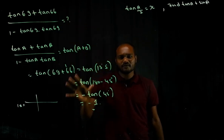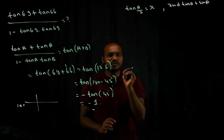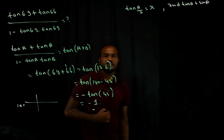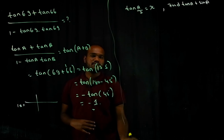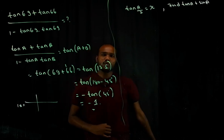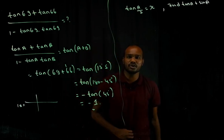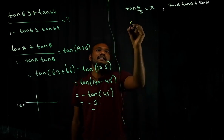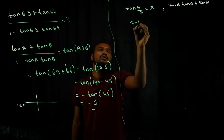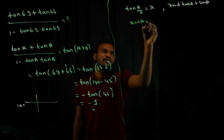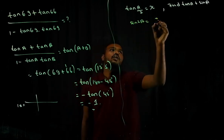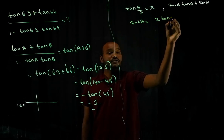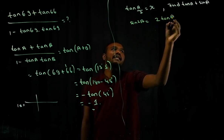We have made an entire video explaining this. Please go check it. Now for the next question, the necessary formulas are: sin 2A = 2 tan A / (1 + tan²A), and in terms of A/2: sin A = 2 tan(A/2) / (1 + tan²(A/2)).